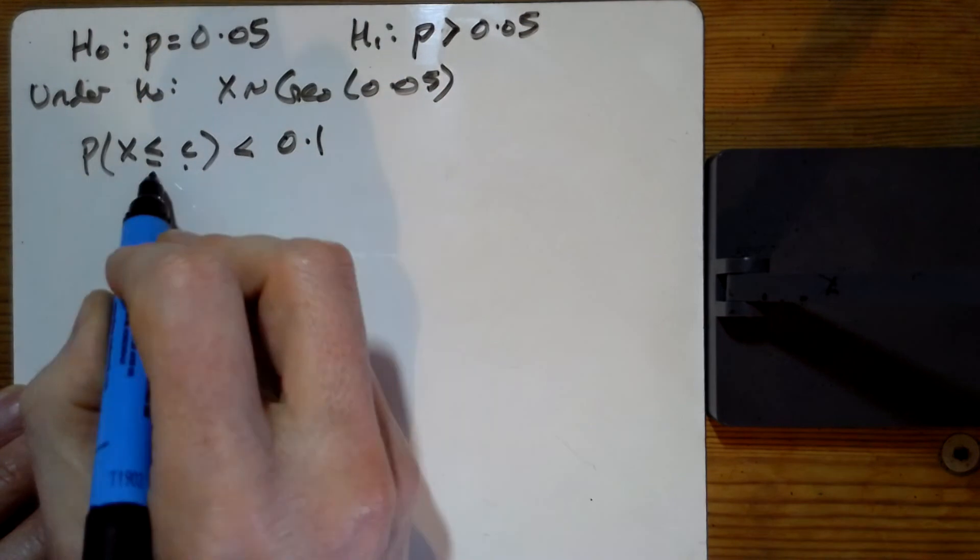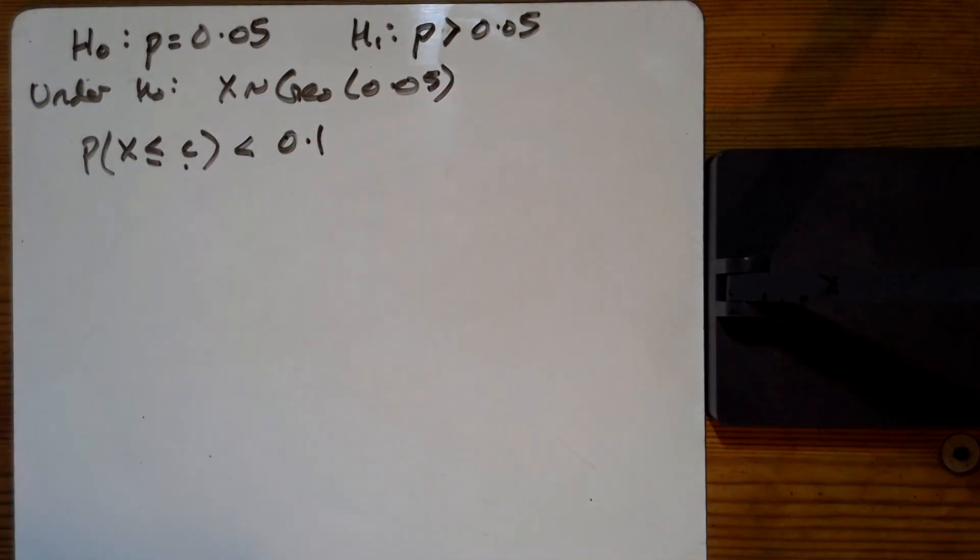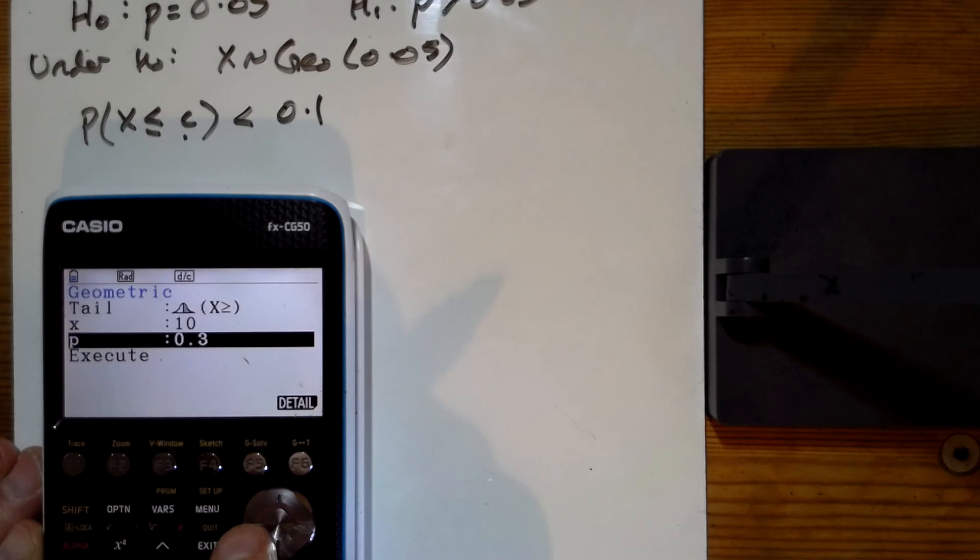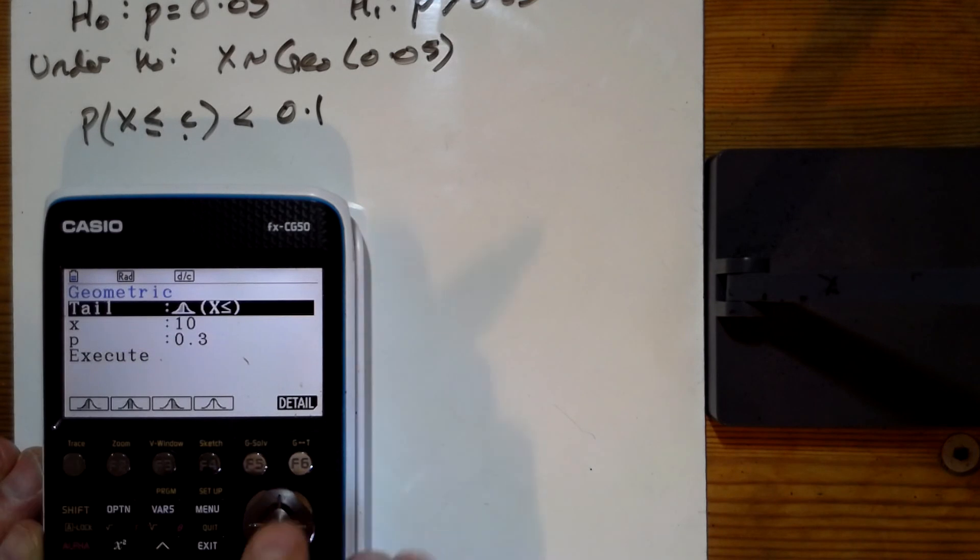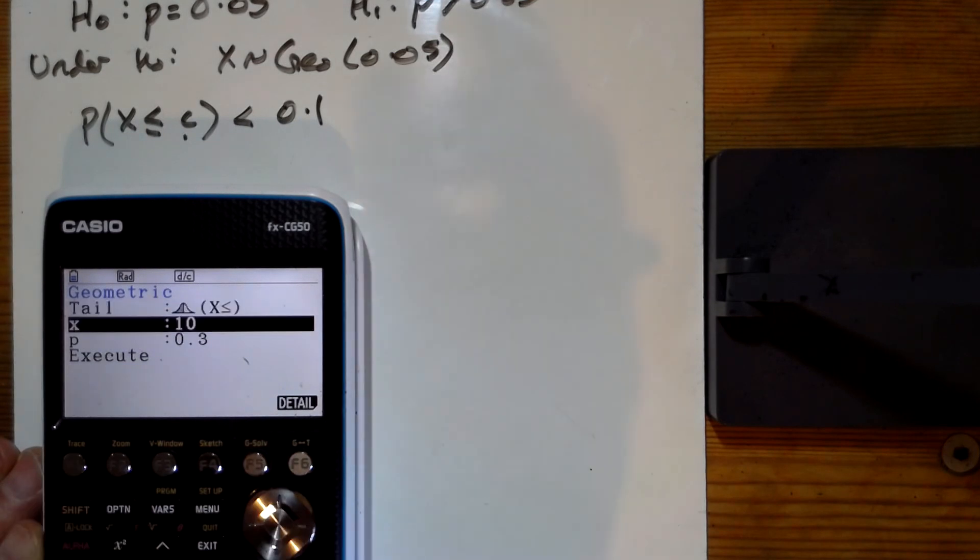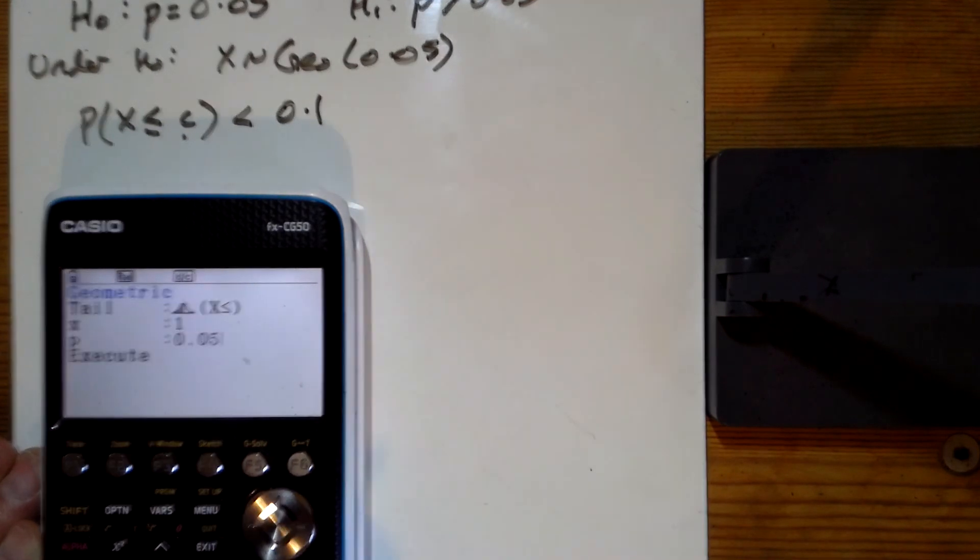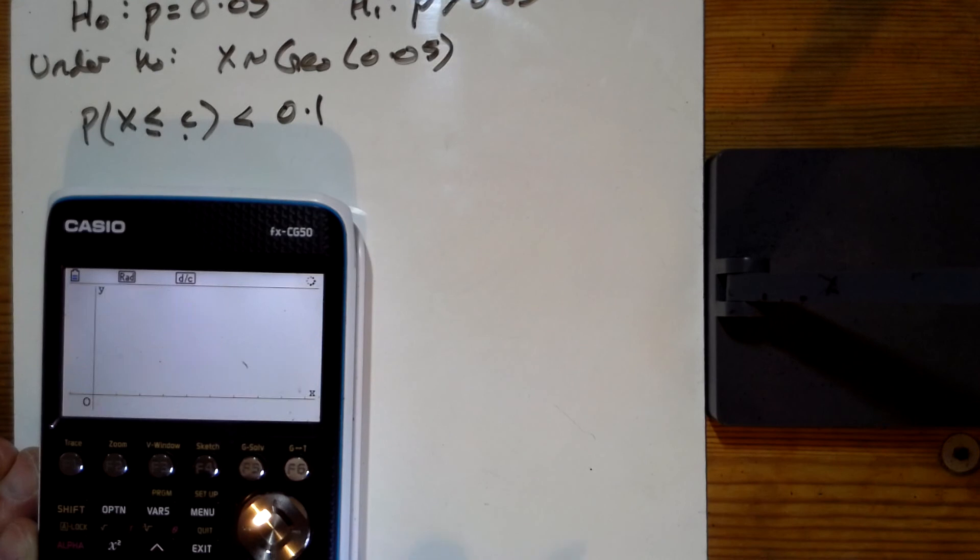Just going to do it on the calculator, though. So here's my geometric. This time I'm going for a less than. I don't know what X number is going to be. Let's just put 1 in to start with. And the probability is 0.05. So there's that bit there.